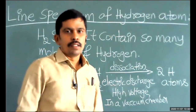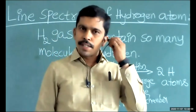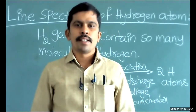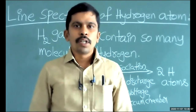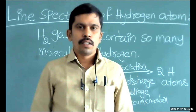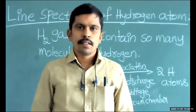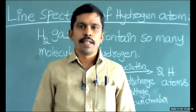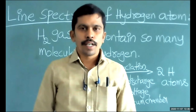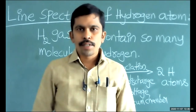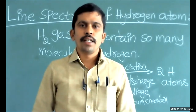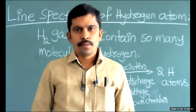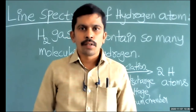In the periodic table, we know 118 elements are present. Among the 118 elements, the first element is hydrogen, and we know the atomic number of hydrogen is one. In the last class, I discussed that hydrogen exists in three isotopic forms: protium, deuterium, and tritium — H1-1, H1-2, and H1-3. We are discussing only about H1-1, which contains one electron and one proton, but no neutron. So it is the arrangement of proton and electron only.